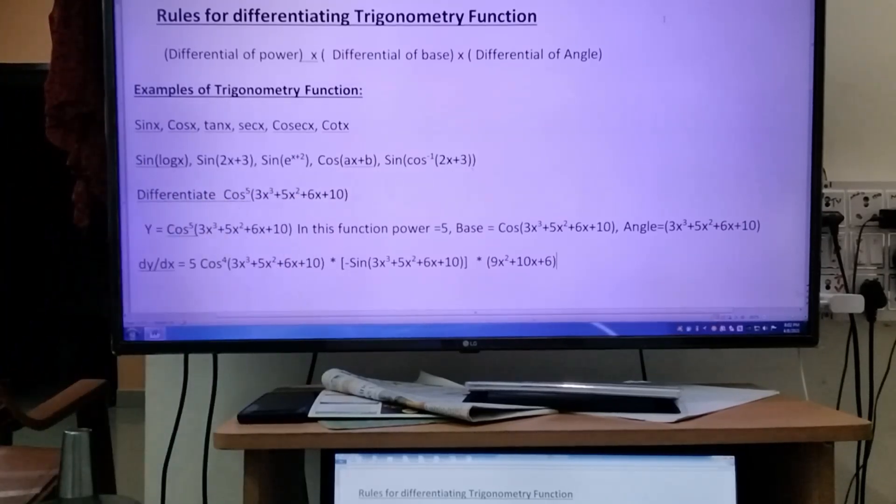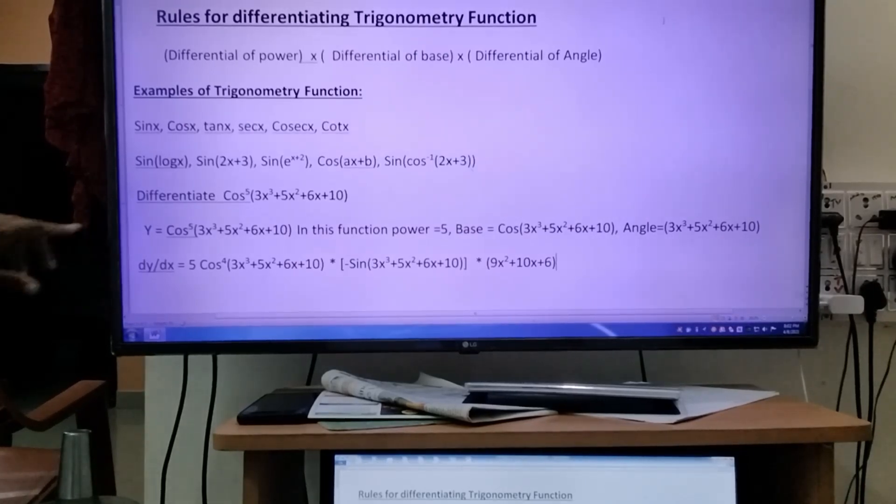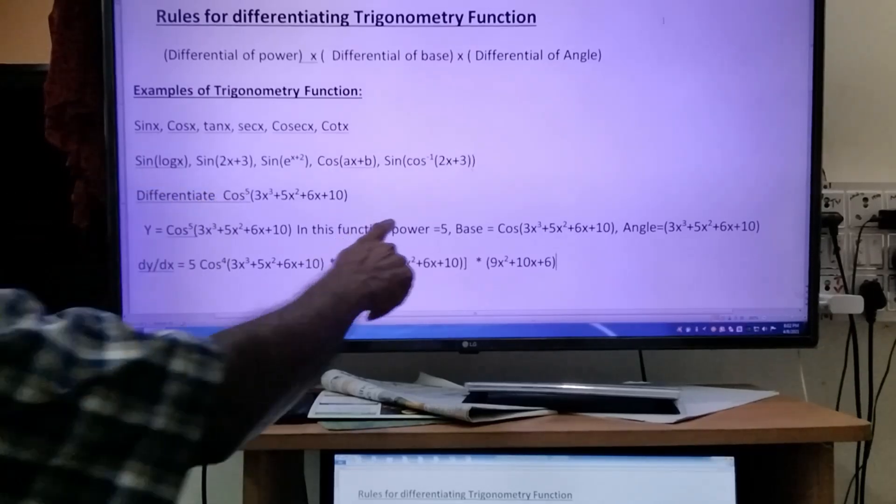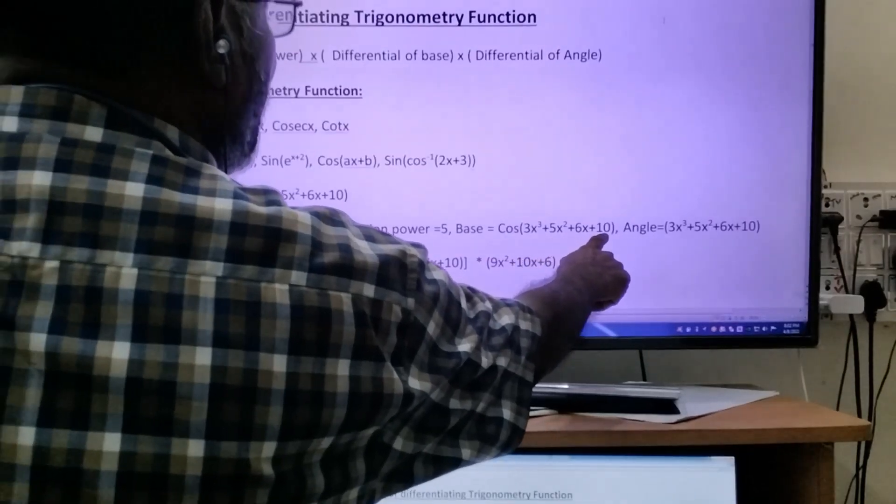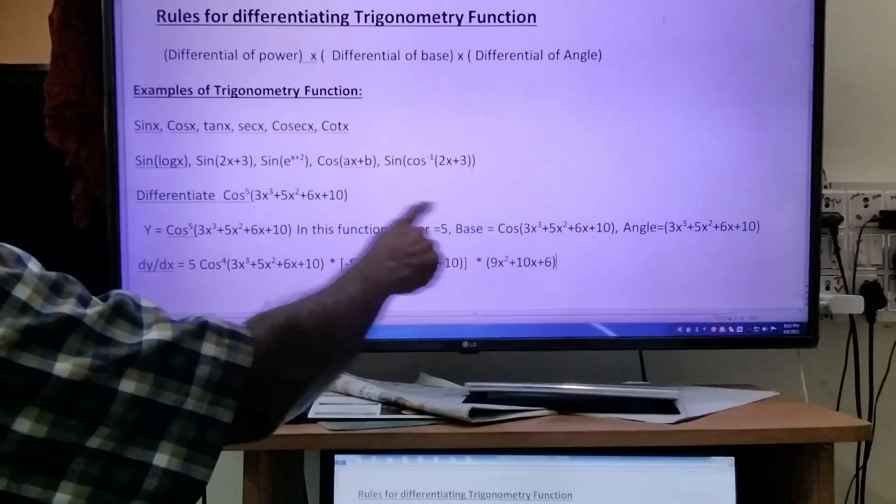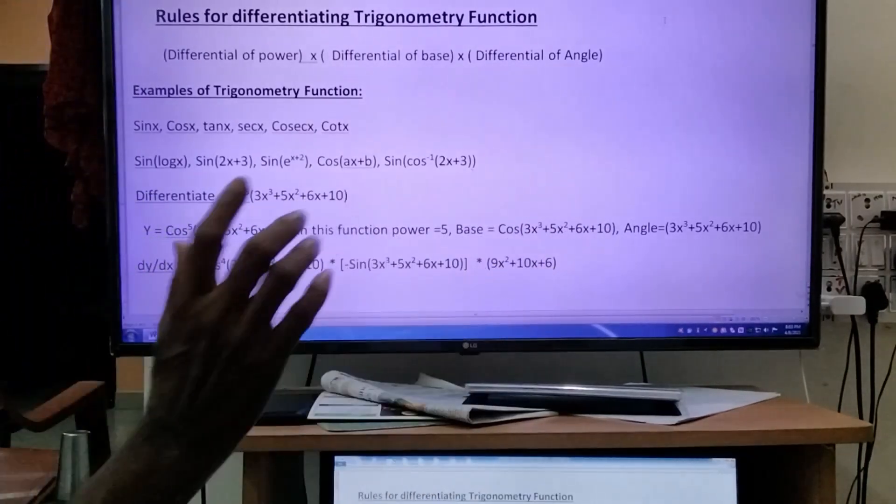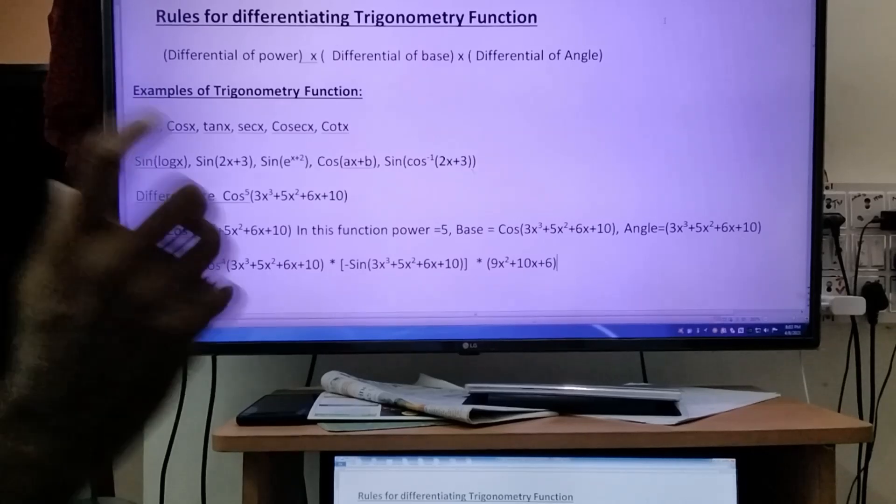What is power? 5 is called the power. What is base? Cos(3x³ + 5x² + 6x + 10) is called the base. What is angle? 3x³ + 5x² + 6x + 10 is the angle. Now we'll be reading what is meant by power, base, and angle.